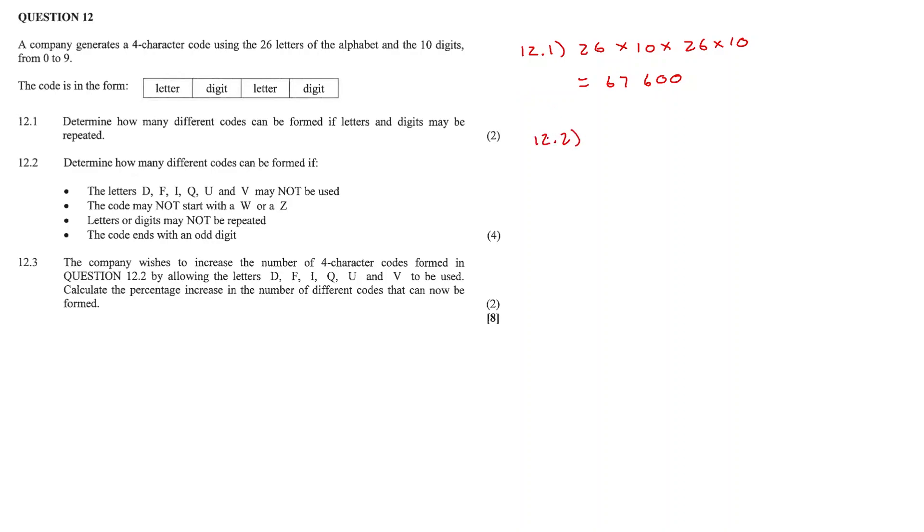Question 12.2: Determine how many codes can be formed if the letters D, F, I, Q, and U may not be used. The code may not start with a W or a Z. Letters or digits may not be repeated and the code ends with an odd digit. So if we remove the letters D, F, I, Q, U, and V, that's six letters. We are already down to 20 out of the 26 letters that we can use in the code.